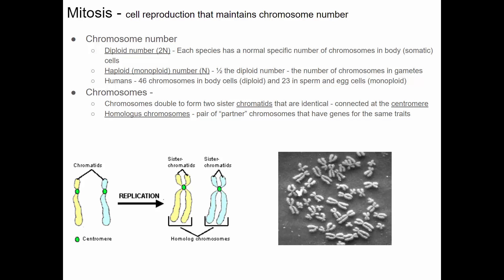The only cells that typically have a different number are reproductive cells, called haploid cells, abbreviated N. In humans, a sperm cell or an egg cell has only 23 chromosomes — half the number. During fertilization, when they combine again, you're back up to the proper chromosome number. These chromosomes are where our DNA is. Our DNA, which has a series of bases — A's, T's, G's, and C's — is wound around some protein, and that's what forms our chromosomes.